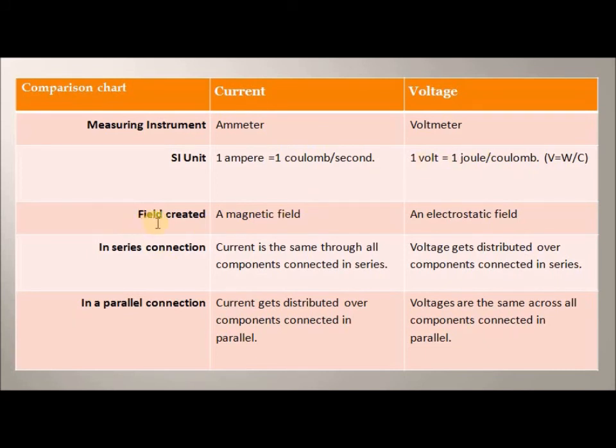In terms of field created: current creates a magnetic field, while voltage creates an electrostatic field.